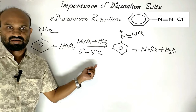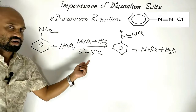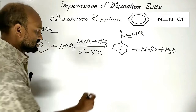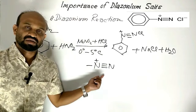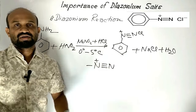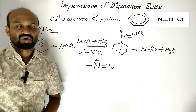This reaction is called diazonium reaction, or diazotization. Definition: the reaction used to synthesize diazonium salt from aniline at 0°C to 5°C is known as diazonium reaction or diazotization. This group is known as the diazonium group, which is why this compound is called benzene diazonium chloride.